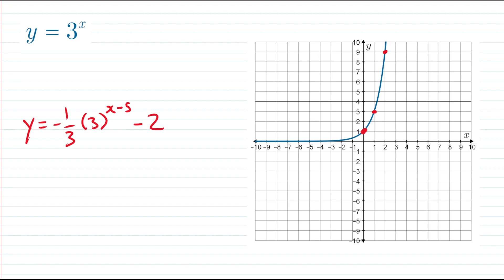When applying multiple transformations, I strongly recommend leaving the shifting until last. Reflections, stretches, and compressions are done with respect to an axis — vertical ones with respect to the x-axis, horizontal ones with respect to the y-axis. If you shift first, you have to track where that reference axis moved to, which creates extra mental work. Work on transformations from left to right in the equation: handle multiplication and division (reflections, stretches, compressions) before addition and subtraction (shifts).